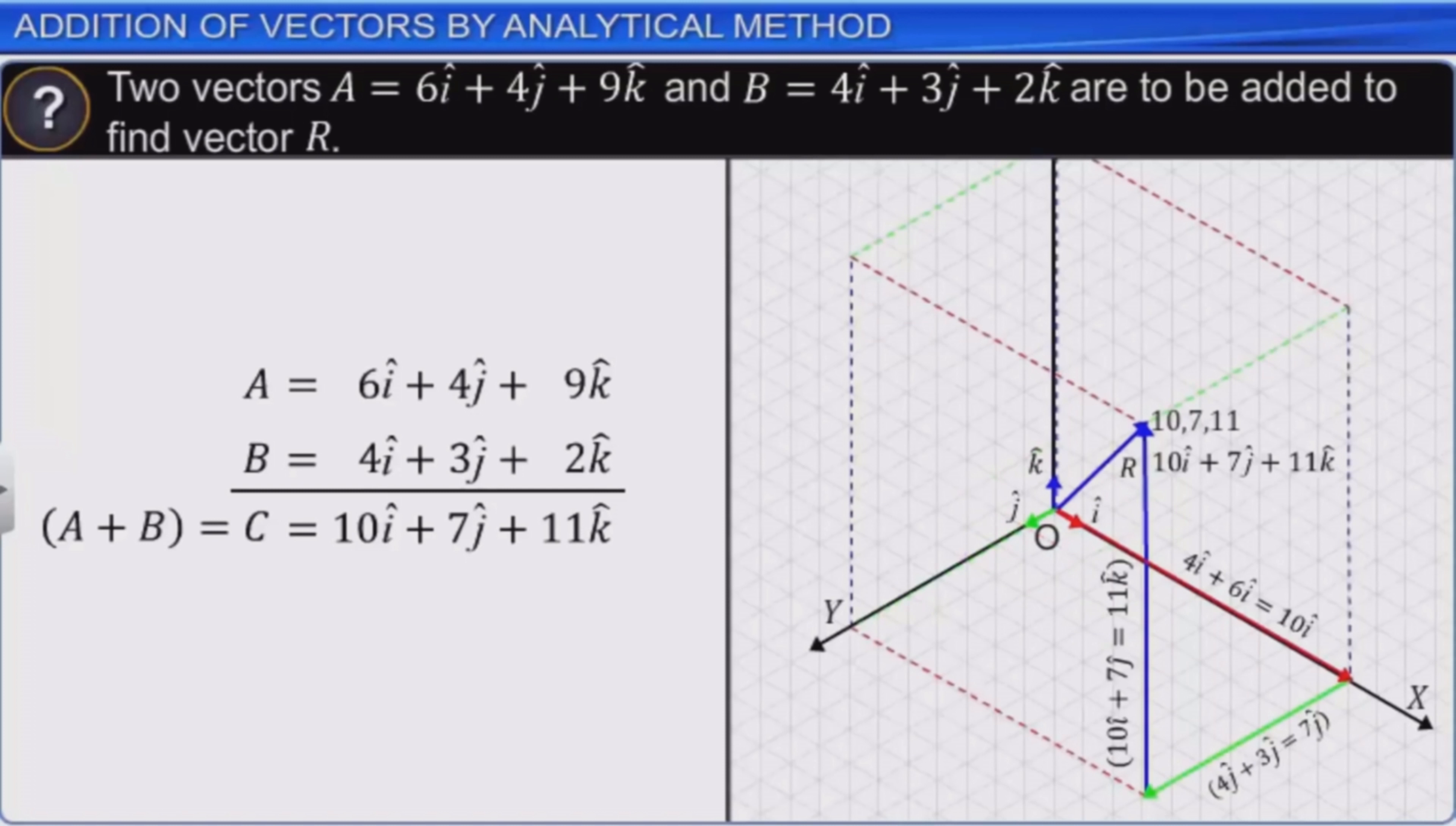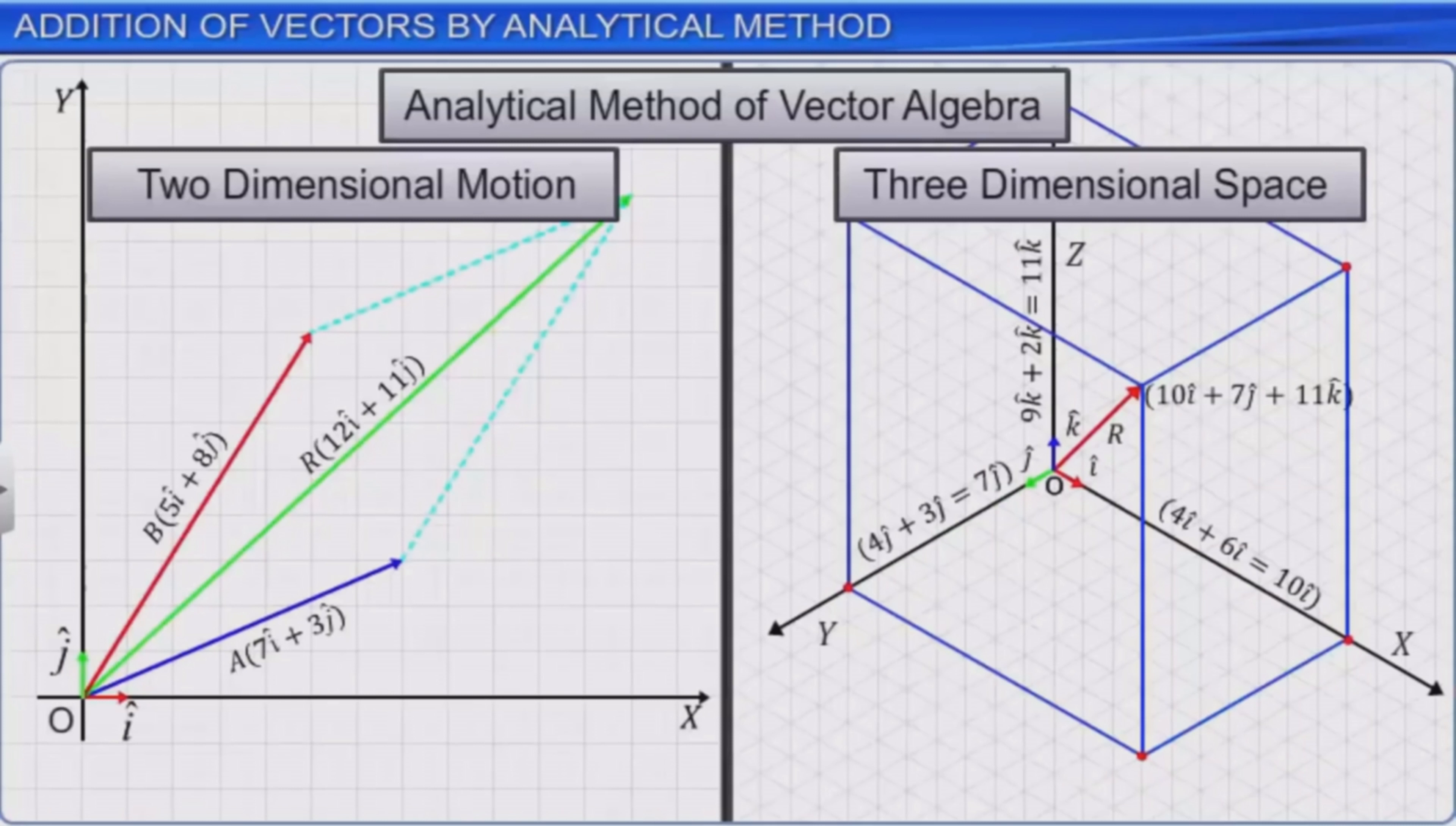You can draw the resultant vector R after determining the coefficients of i, j, and k by simply adding the corresponding coefficients of A and B. Thus you have learned the analytical method of vector addition for two-dimensional motion and in three-dimensional space.